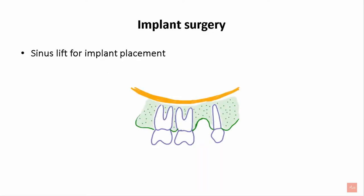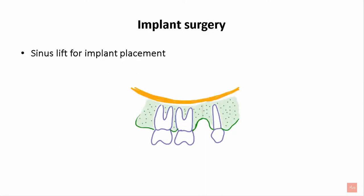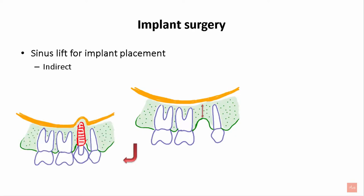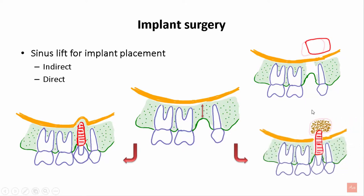In case of implant surgery, when there is inadequate vertical height to place an implant, a sinus lift can be performed. An indirect sinus lift can be done to facilitate implant placement, or a direct sinus lift can be performed by raising a lateral window, followed by placement of a graft and then implant placement.